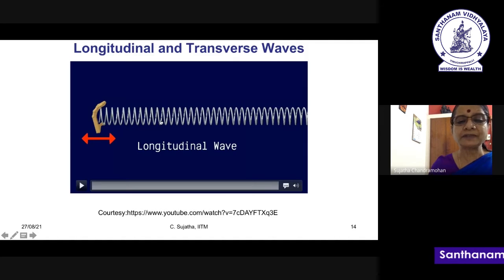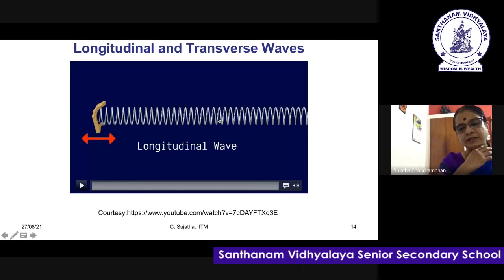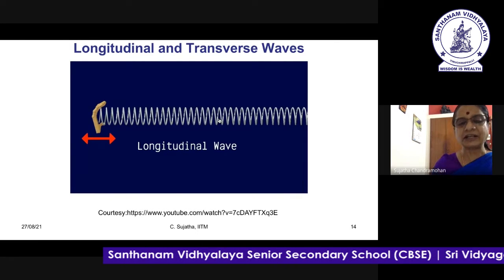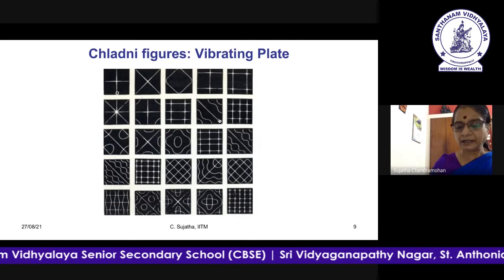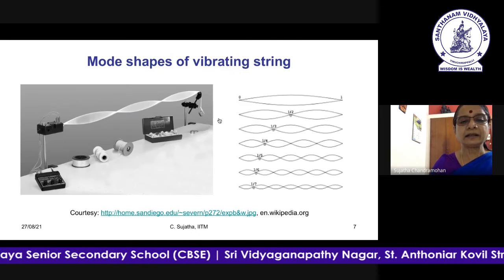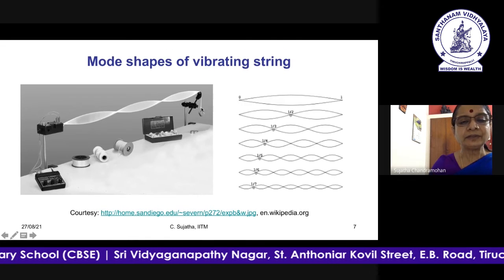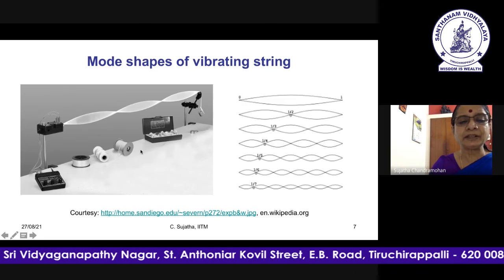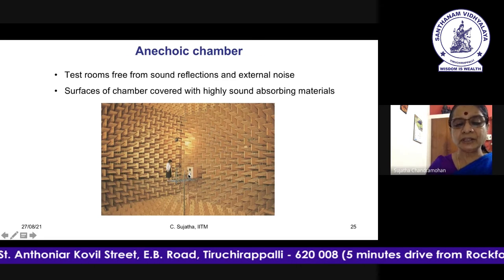Longitudinal waves are like the sound waves we are studying. Transverse waves are this kind of wave where the wave is propagating perpendicular to the direction the machine is producing.